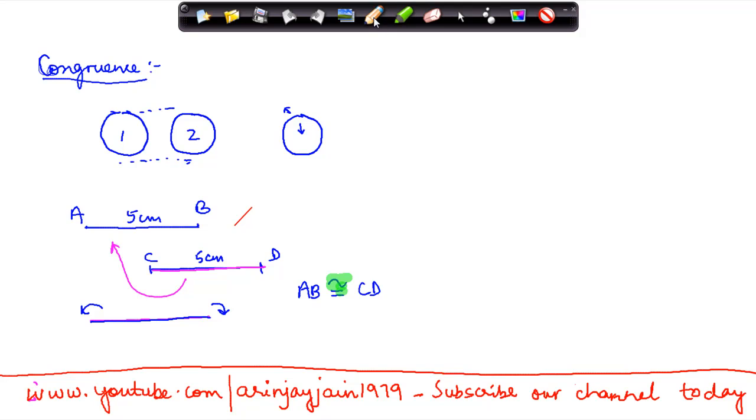In the earlier example you would have said that figure one is congruent to figure two. So congruence means that both of them are exactly the same as each other.